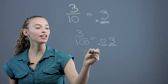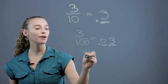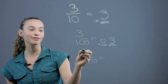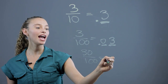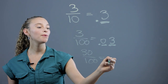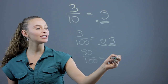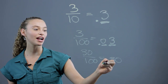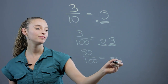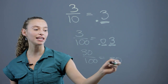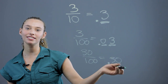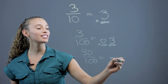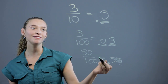If we have 30 over 100, well that's the same as 3 tenths if you reduce it. So that's .3. You can write it as .30 — it's the same thing. You can say that's the hundredths place, but you don't need to write a zero because it's after the decimal, so you can just write .3.